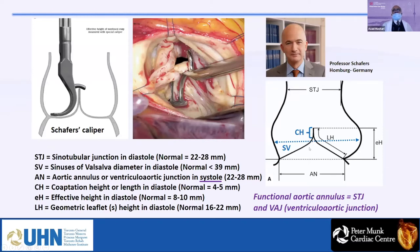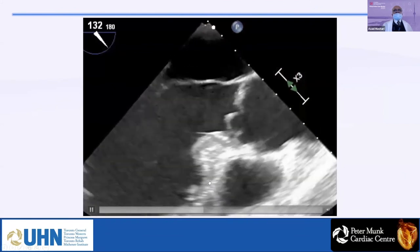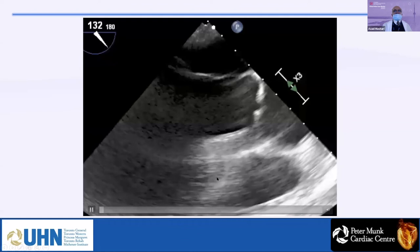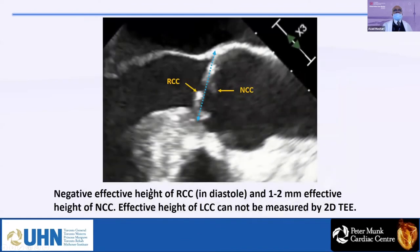Geometric height of the leaflet is very important. Using the surgical criteria and measuring the effective height: the tip of the right coronary cusp is below the virtual aortic annulus line — that is a negative effective height, indicating severe prolapse. The non-coronary cusp tip is about two to three millimeters above the line — so it has a prolapse as well. In this patient, the right coronary cusp has severe prolapse below the line, and the non-coronary cusp has a prolapse two to three millimeters above the line.